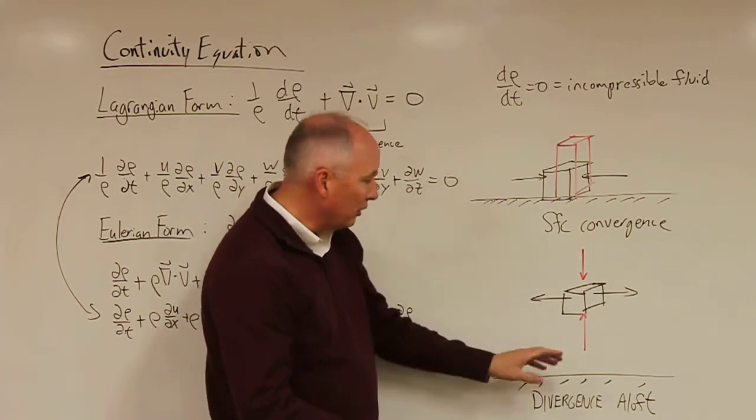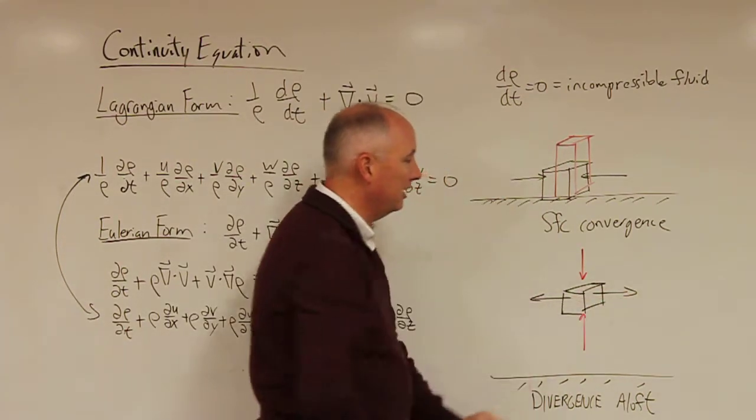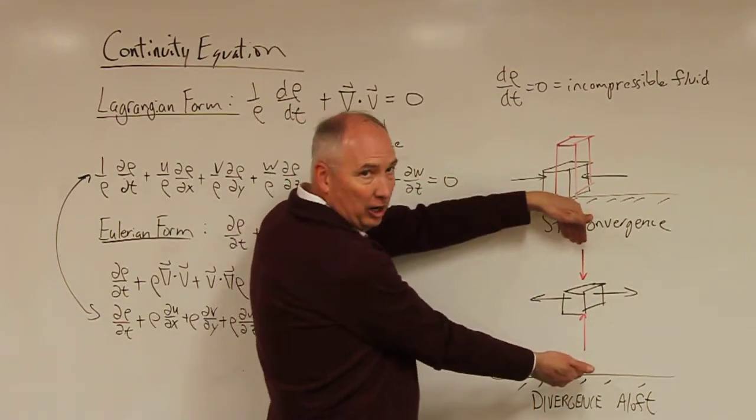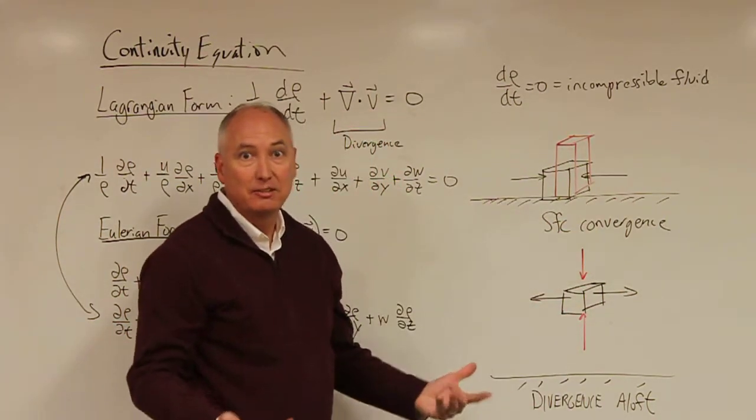you're going to have to stretch that box and cause vertical motion at the surface. Likewise, if you happen to have divergence aloft, if you have divergence aloft in an air parcel, then air will move into that to essentially prevent the density from going to zero.